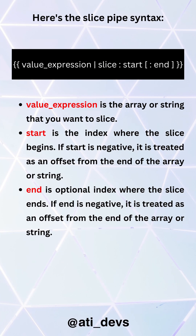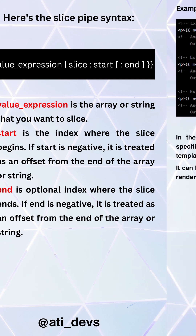Here is the SlicePipe syntax. Value expression is the array or string that you want to slice. Start is the index where the slice begins. If Start is negative, it is treated as an offset from the end of the array or string. End is an optional index where the slice ends. If End is negative, it is treated as an offset from the end of the array or string.